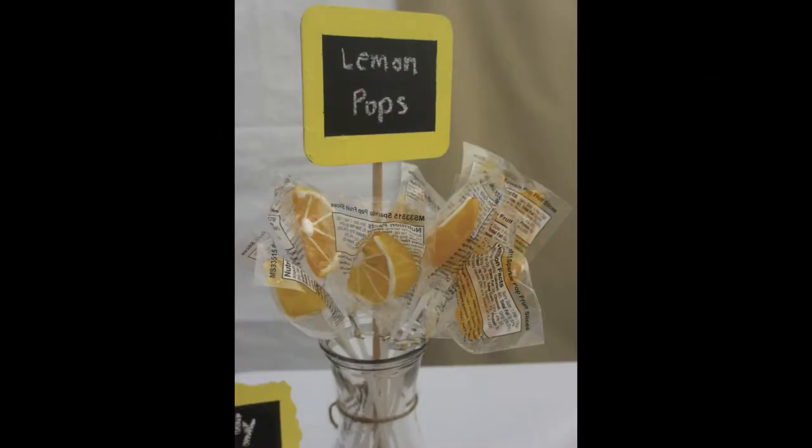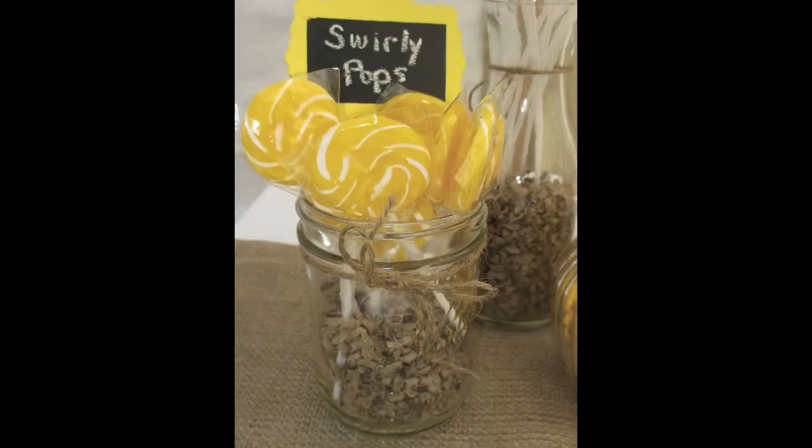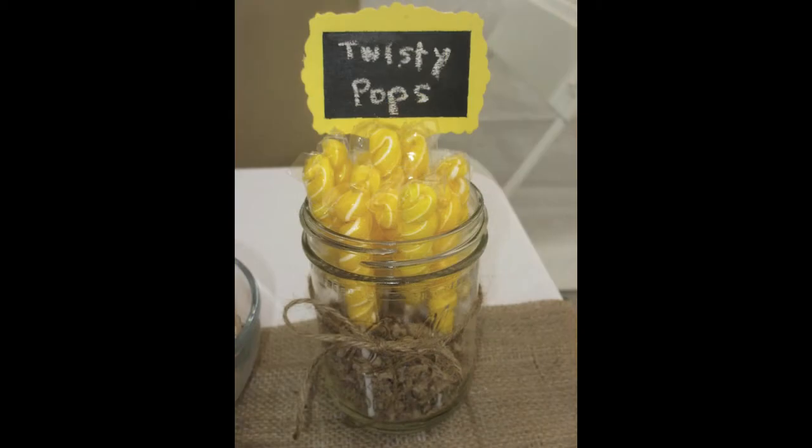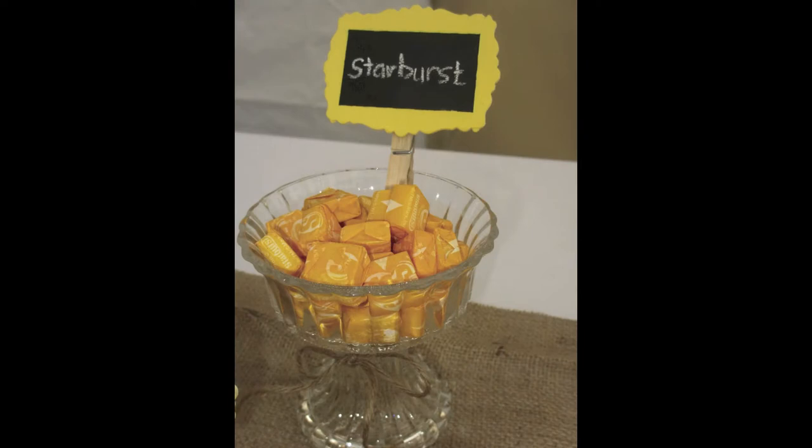These are lemon pops. They look like slices of lemons. Some swirly lollipops. We put shredded brown paper bags to hold the pops up. Twisty sweet pops. We tied jute string around the containers and we got some yellow starburst.